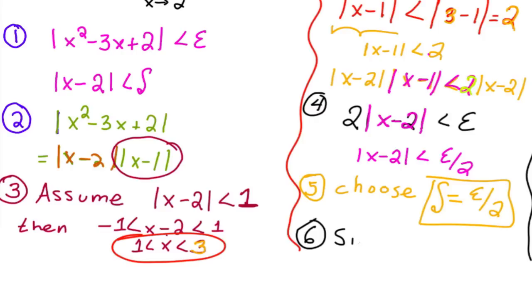So since x minus c or x minus 2 is less than delta or epsilon over 2, then what that means is 2 times x minus 2 is less than, the 2 is this exact 2, and then x minus 2 is less than epsilon over 2. And so this is equal to epsilon.